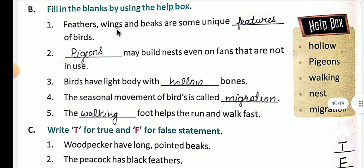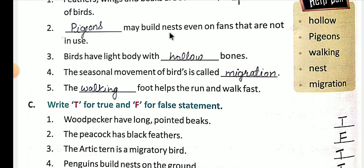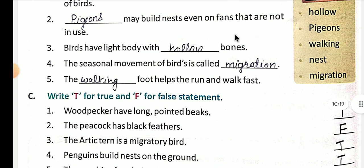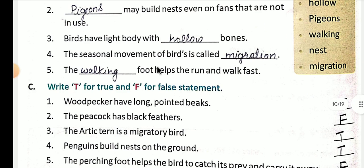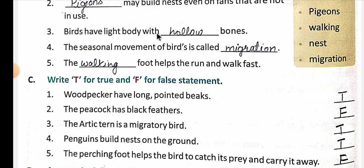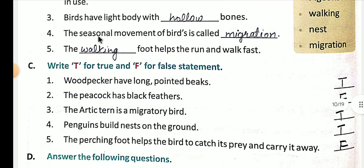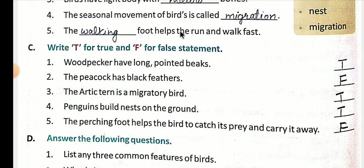Fill in the blanks: Feathers, wings, and beaks are some unique features of birds — pakshiyon ke kuch features hain jaise feathers hain, wings hain, beak hai — ye kuch unique features hain birds ke. Pigeons may build nests even on fans that are not used. Birds have a light body with hollow bones — pakshiyon ka shareer halka hota hai aur unki jo haddiyan hoti hain wo khokhli hoti hain. The seasonal movement of birds is called migration. The walking foot helps birds to run and walk fast.